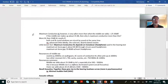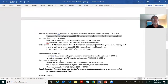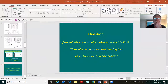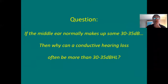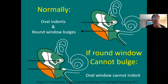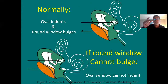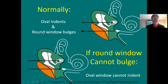The maximum conductive hearing loss is often more than 30 to 35 dB. If the middle ear makes up between 30 and 35 dB, a conductive hearing loss can be more than this. Ordinarily, when the oval window pushes in, the round window can bulge. But if that cannot happen, the hearing loss will be more than what the middle ear makes up. We'll look at those pathologies today.